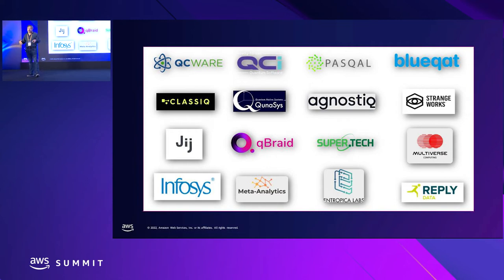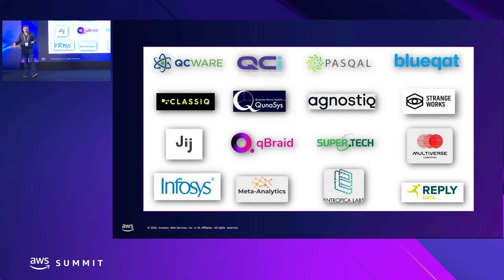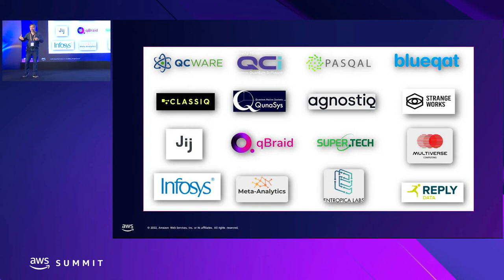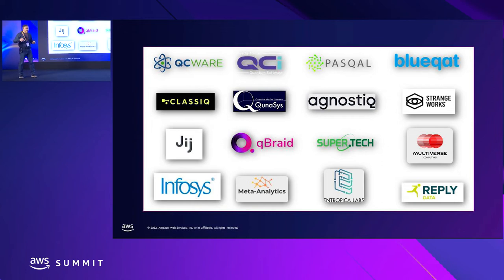At AWS we have the AWS Partner Network — a global program focused on helping partners build successful AWS-based businesses. It's a very diverse network with over 100,000 partners from 150 countries. When it comes to quantum computing and Amazon Braket, partners also play an important role. On this slide are logos of companies using Braket or working with our professional services team, the Amazon Quantum Solutions Lab, to build solutions.